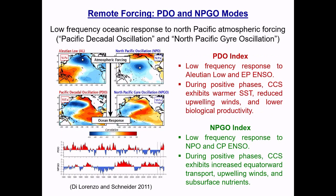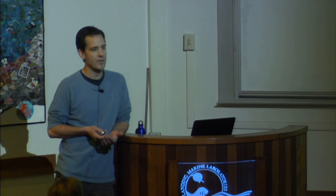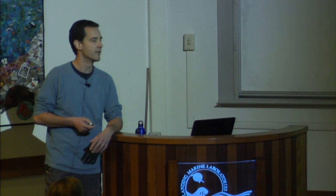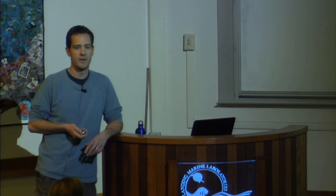Two other types of remote forcing are the Pacific Decadal Oscillation and the North Pacific Gyre Oscillation — both are low frequency responses of the ocean to atmospheric variability in the North Pacific. The PDO is connected to variability in the Aleutian Low and the Eastern Pacific El Niño; during positive phases of the PDO, California Current productivity is generally reduced. The NPGO, the low frequency response to the North Pacific Oscillation and Central Pacific El Niño, shows increased subsurface nutrients in the California Current during its positive phases.